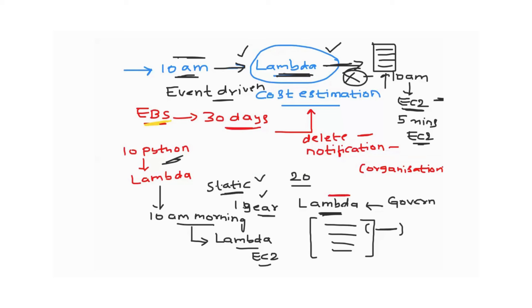With EC2, you'd have to write another script to create the instance, keep it running, and then delete it — and if you forget, you'll be affected with cost. So when required, you should go with the serverless architecture.